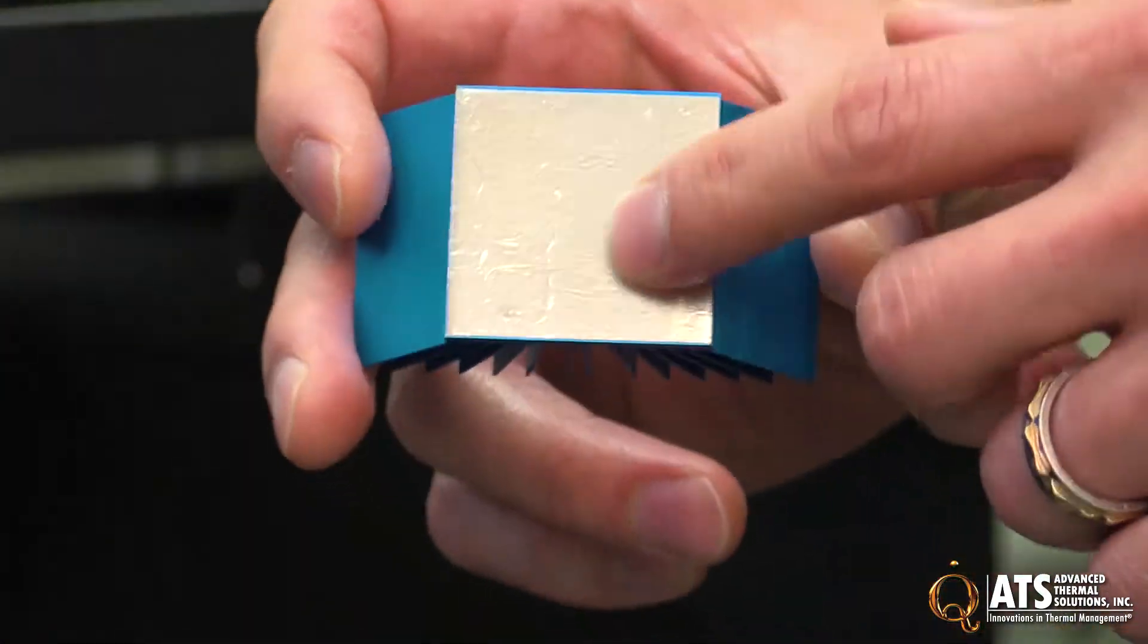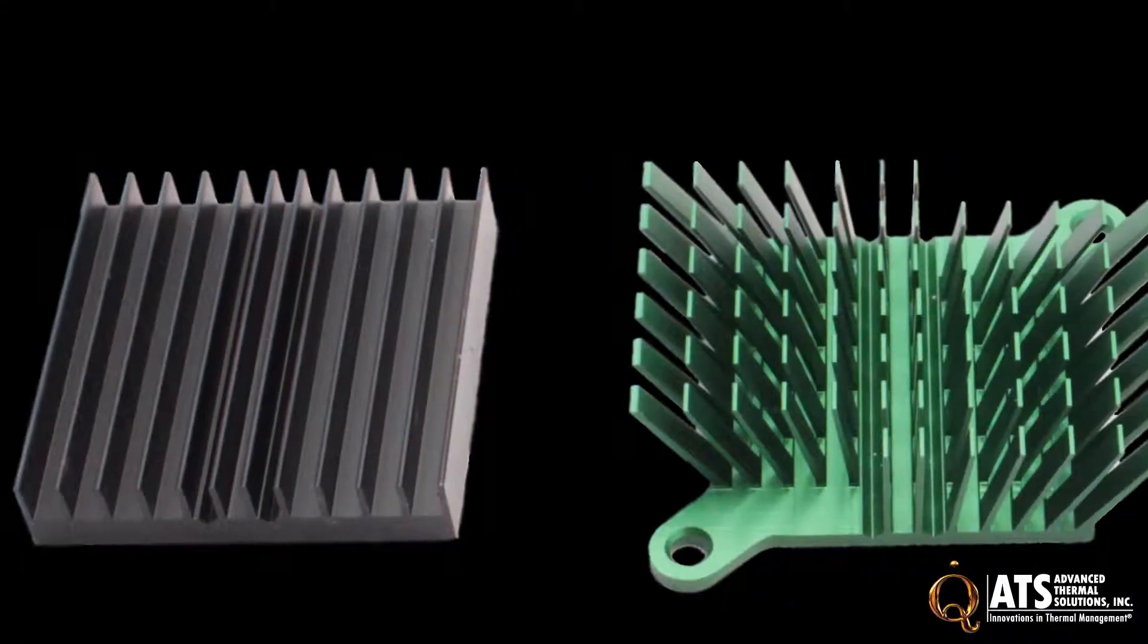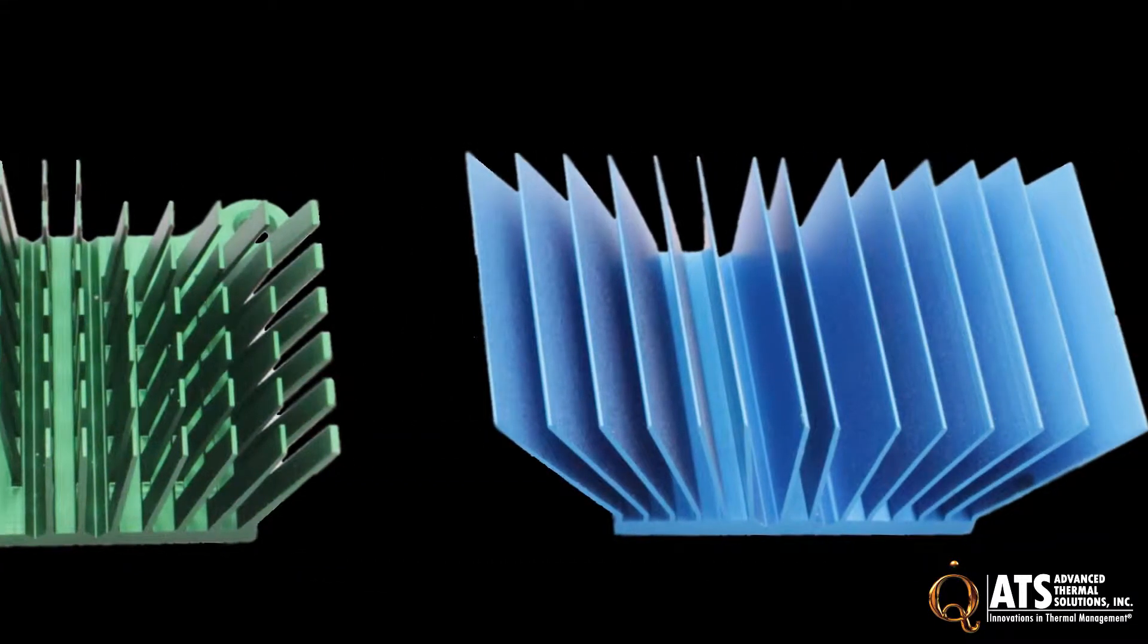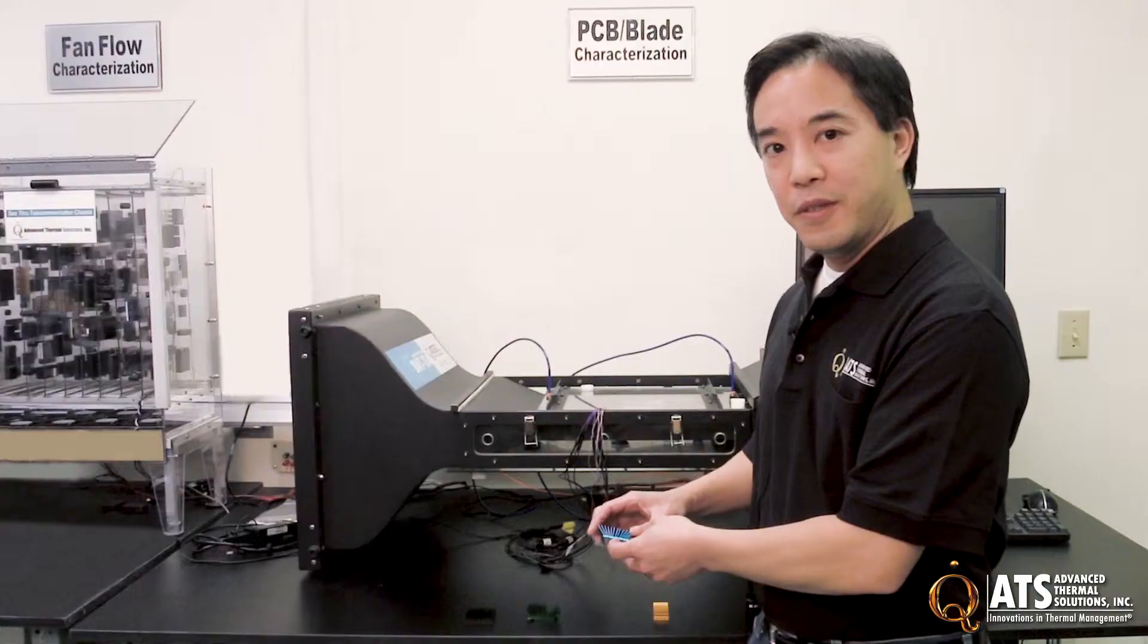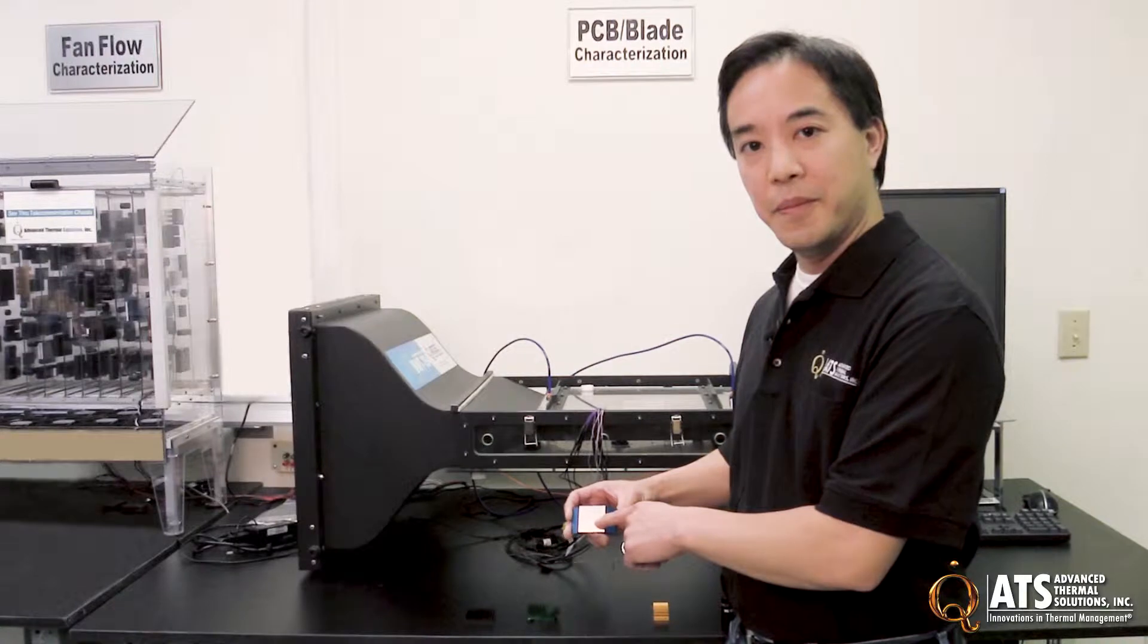So it is silver colored, but our heat sinks are all anodized in certain colors like black and green, blue and gold. If you see this silver color on the bottom, that means that it has the phase change TIM on it.